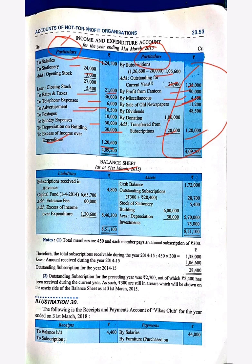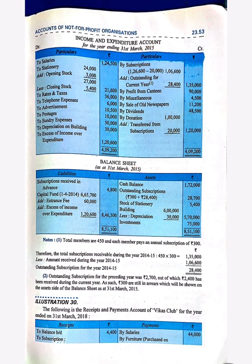Now the closing balance sheet. Subscription received in advance, 4,800, will be mentioned. Then capital fund plus intern fees plus excess of income over expenditure (surplus) gives a total of 8,46,300 on the liabilities side. On the assets side: closing balance of cash, outstanding subscription, stock of stationery, building minus depreciation, and investment — totaling 8,51,000.